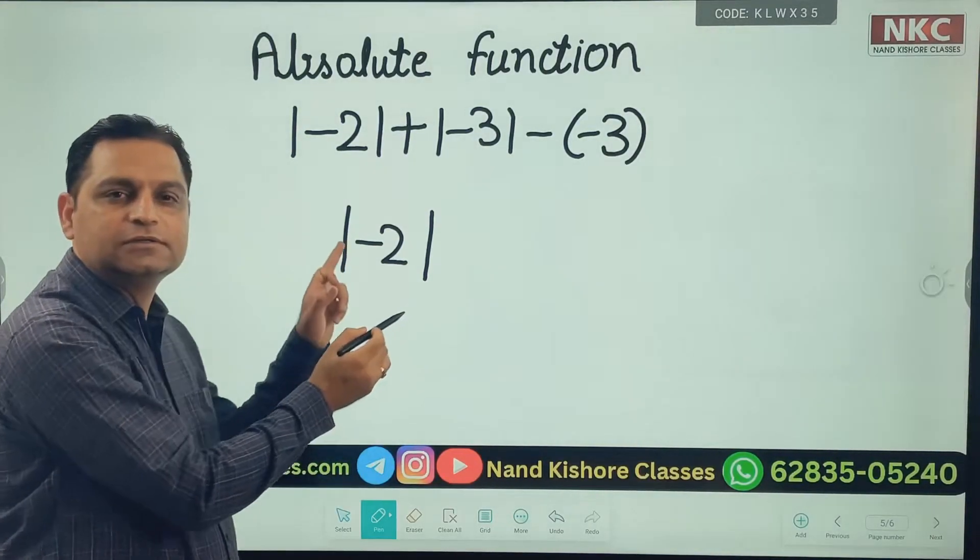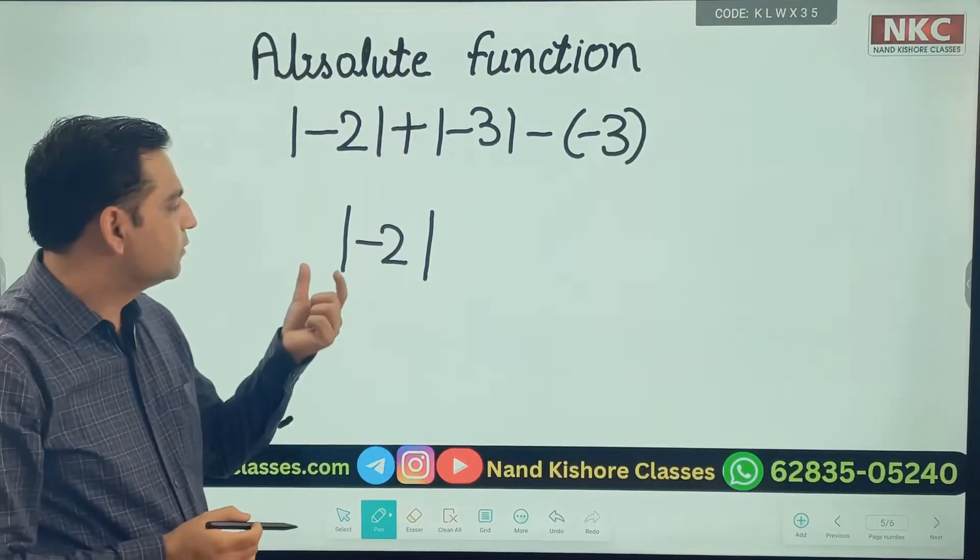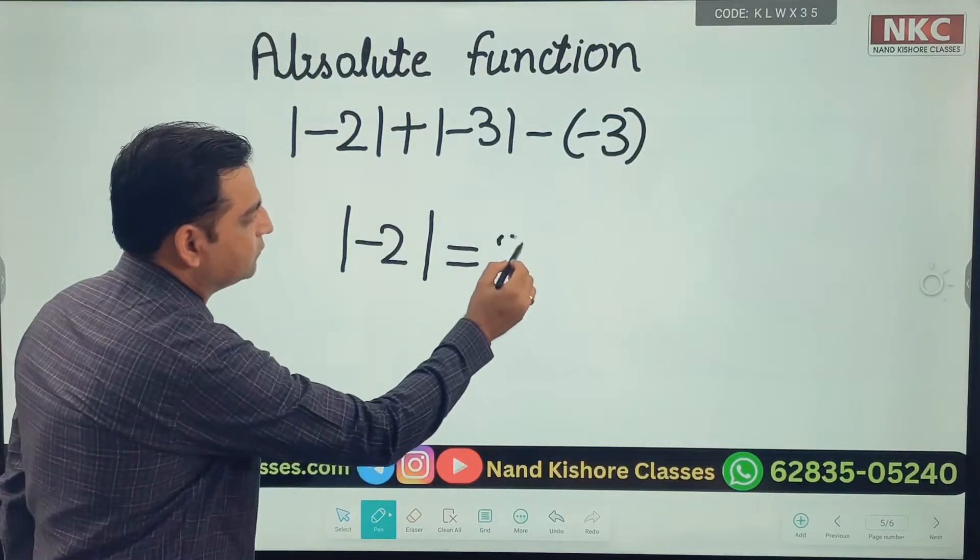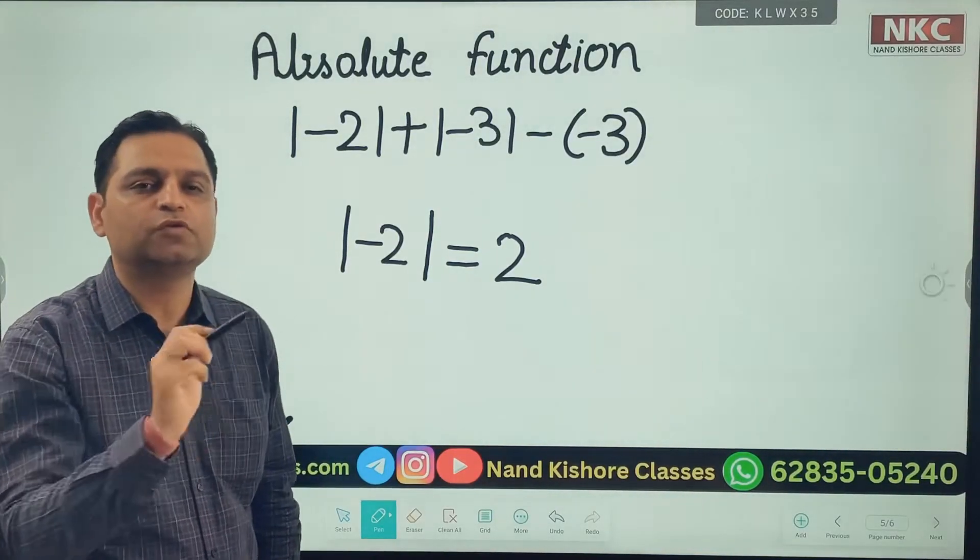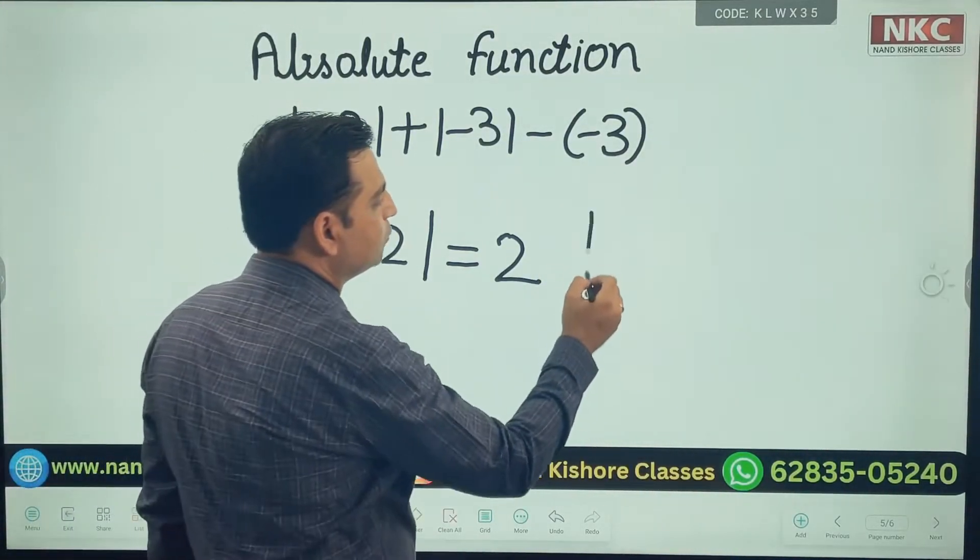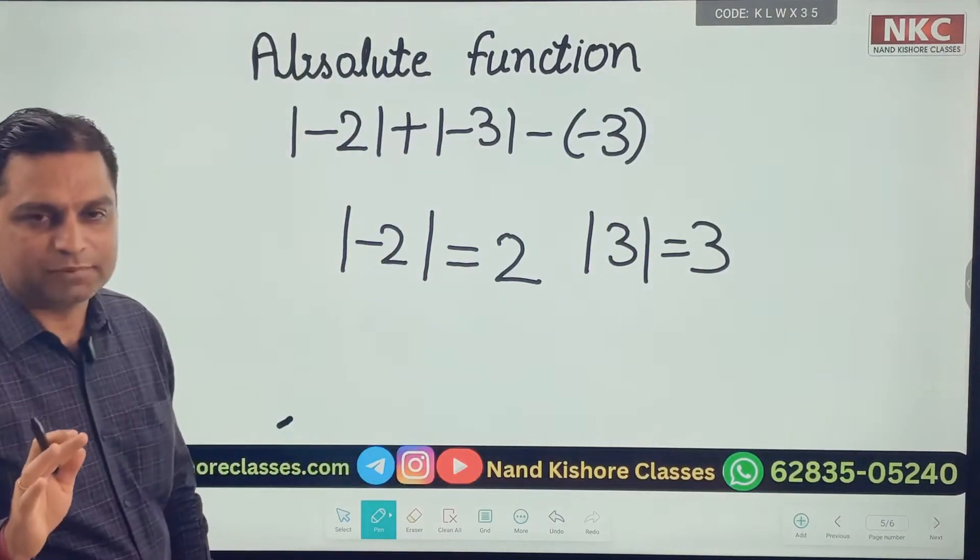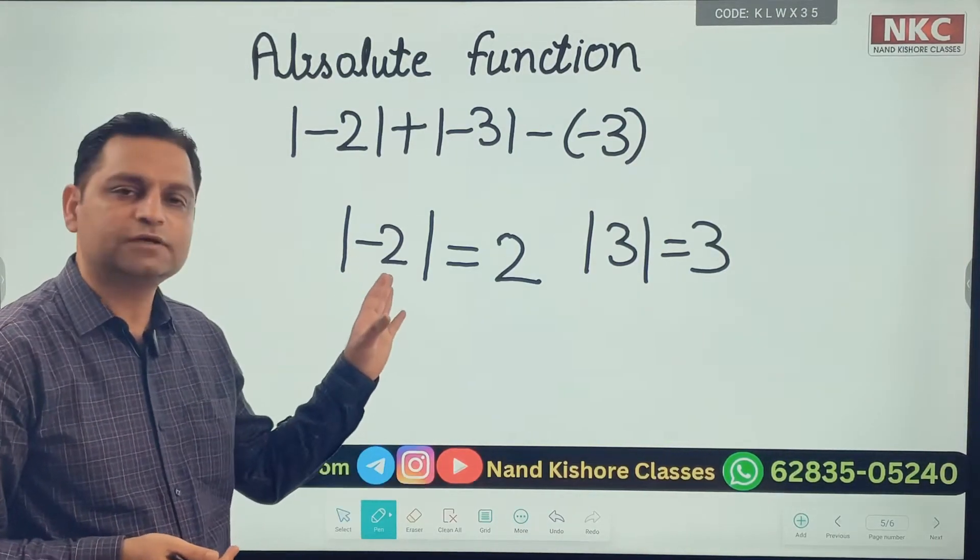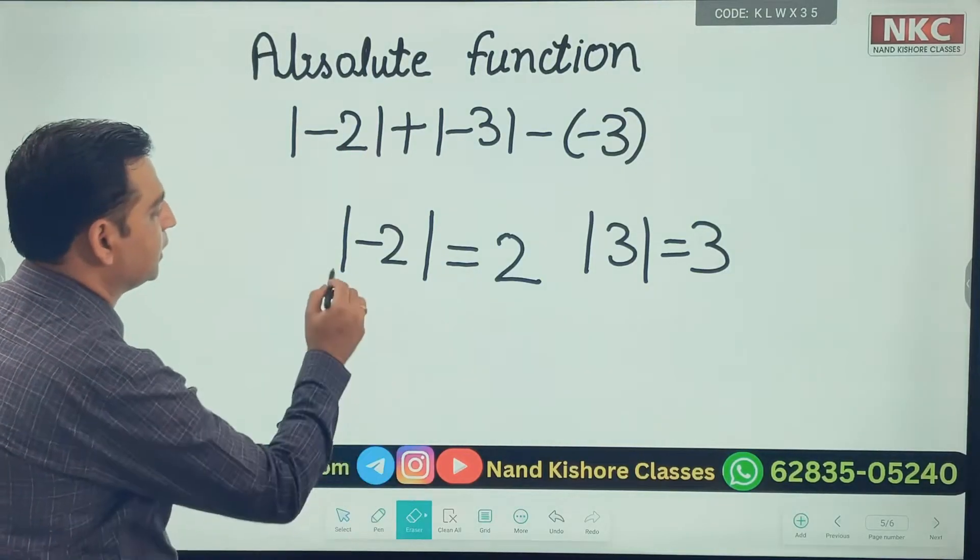This function changes negative to positive. Just keep it in mind. That means wherever you find this type of symbol, the answer becomes positive. Negative will be changed to positive, and if you have positive three it will remain three because it's already positive. So the main use is negative changes to positive. This is what we need to keep in mind.